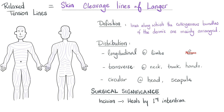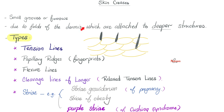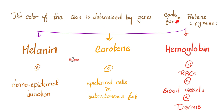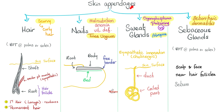Who makes the cleavage lines of the skin? The dermis. And when the dermis is attached strongly to deeper structures, it forms skin creases, which include your fingerprints. Skin color is determined by three pigments. The skin appendages include hair, nails, sweat glands, and sebaceous glands.